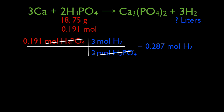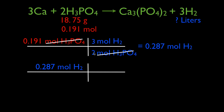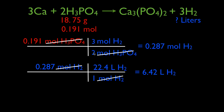Now we need to know: if we have 0.287 moles of hydrogen gas, how many liters is that? We're going to use the molar volume of the gas at standard temperature and pressure, which tells us that one mole of any gas at STP is 22.4 liters. We cancel the moles and get into liters, so 0.287 moles of hydrogen gas equals 6.42 liters.